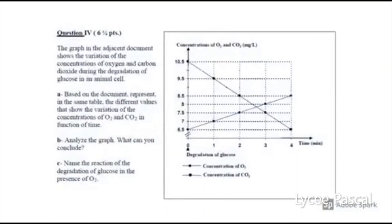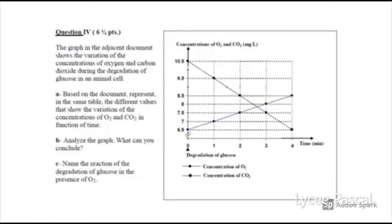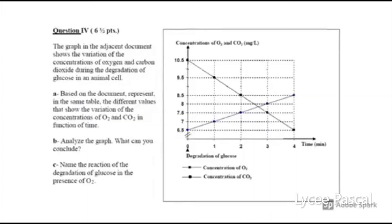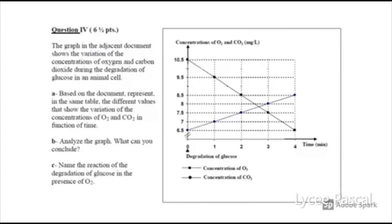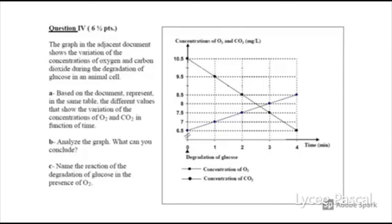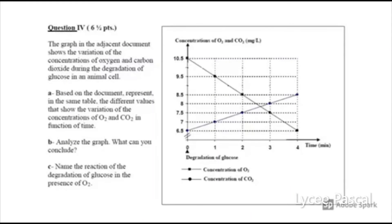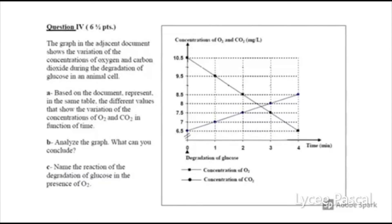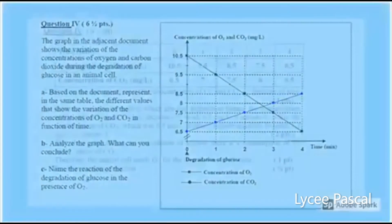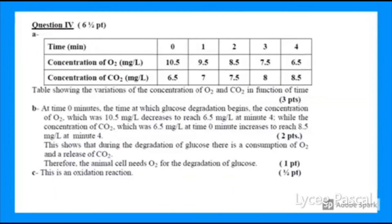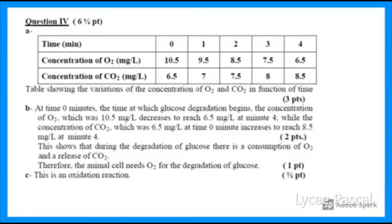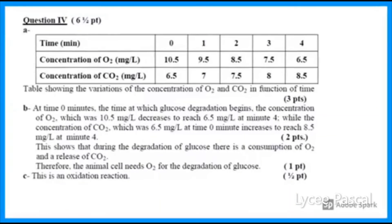Now for the second question: a graph shows the variation of concentrations of oxygen and carbon dioxide during the degradation of glucose in an animal cell. Based on the document, we present the different values showing the variation of oxygen and carbon dioxide concentration as a function of time in a table. When drawing a table, you must close it — draw all borders — and write the title of the table. Include all numbers present on the graph, and don't write any unused values.